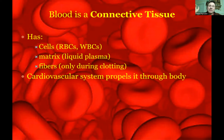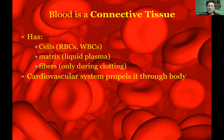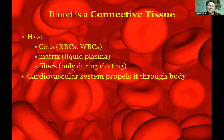Connective tissue includes things like fat, bone, tendons, ligaments, cartilage, and blood. They all have cells — chondrocytes, osteocytes, fibroblasts. They all have fibers — collagen and elastic fibers. And they all have a matrix. In cartilage it was rubbery, in bone it was crystalline, and here in blood the matrix is fluid — it's plasma, a yellowish viscous fluid surrounding the cells: red blood cells, white blood cells, and platelets.